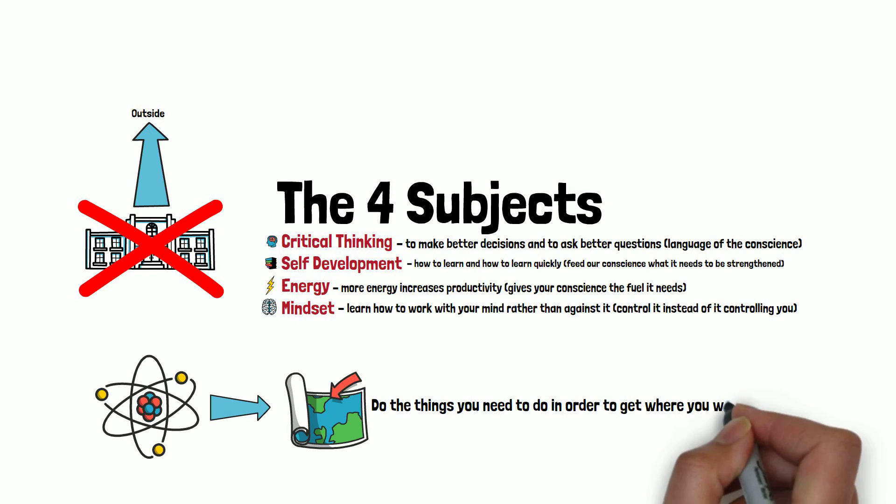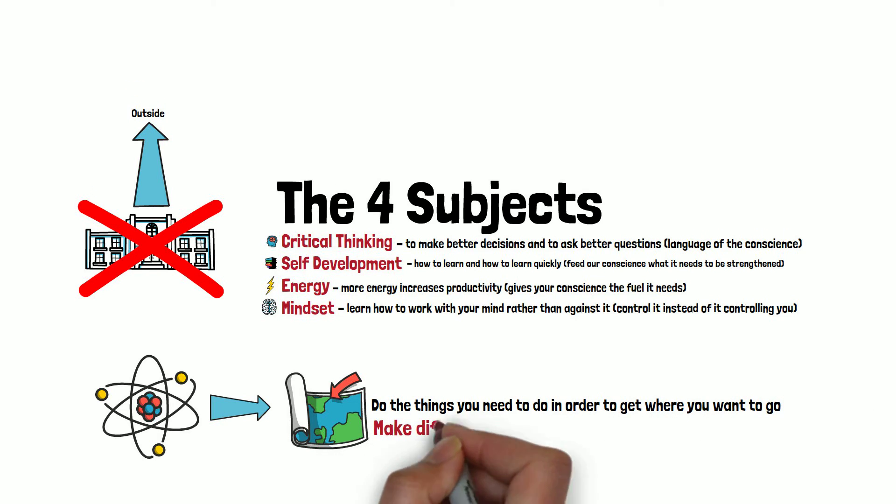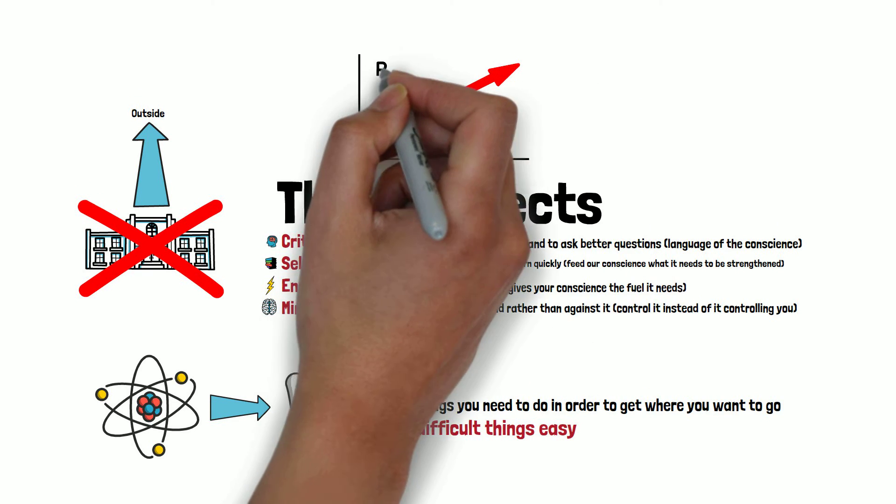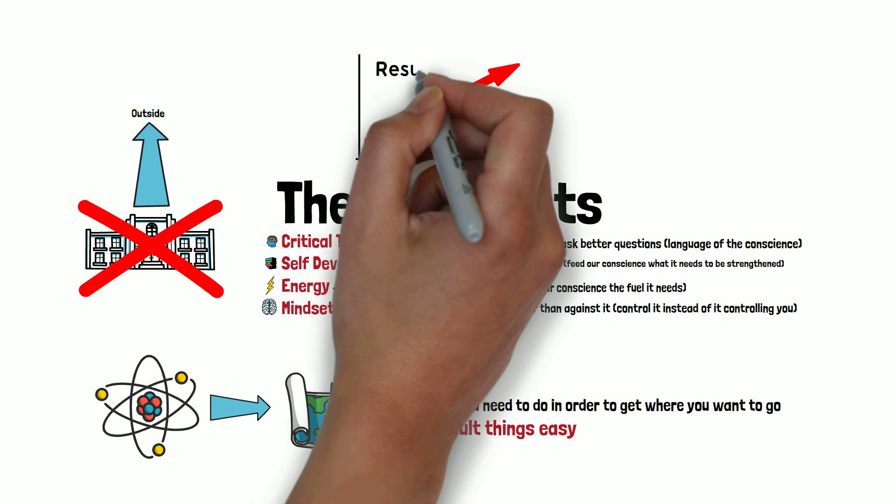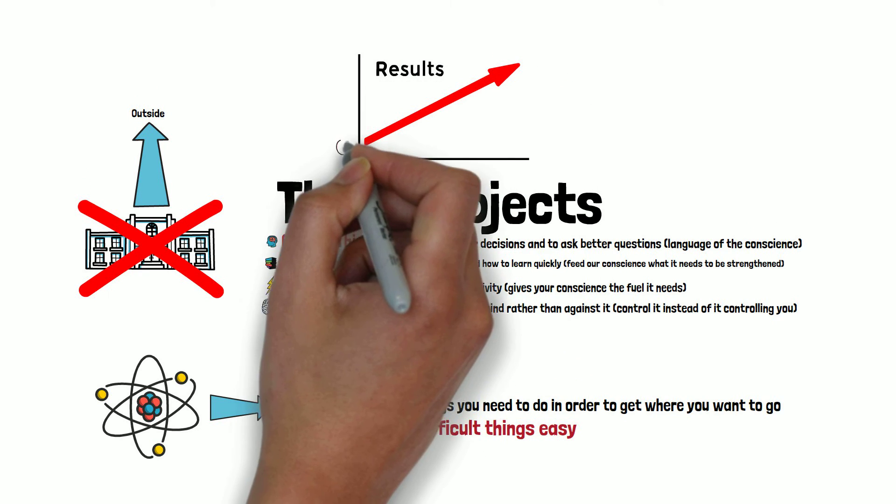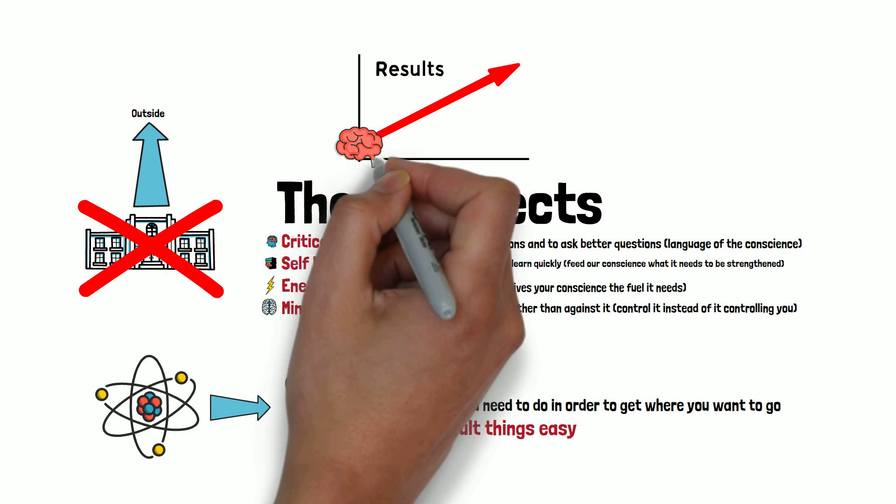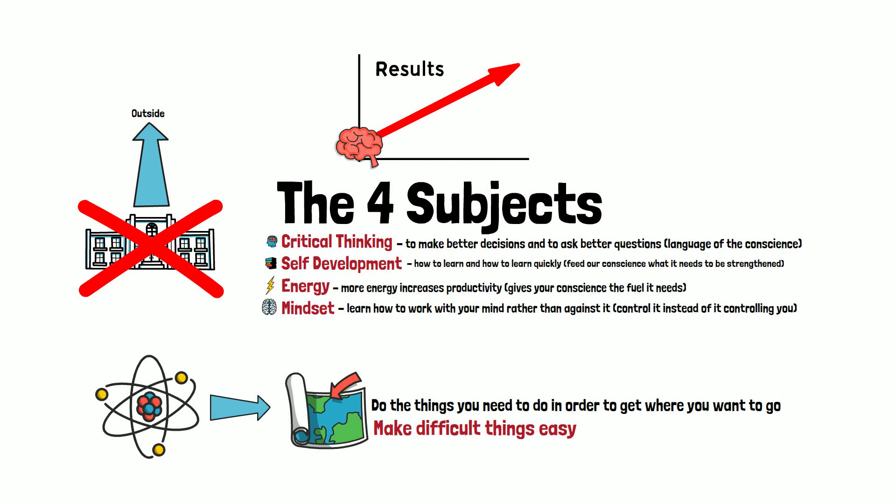This allows you to work out as often as you need to, learn the skills that you need to, have the tough conversations that you need to have. Everything is connected to your conscience. And these four subjects are the main ones that can develop it to get you the life you want. But before we dive into each subject separately, let's quickly go over why these subjects are not taught in school and the reasons the world doesn't want you to create the life you want to live.